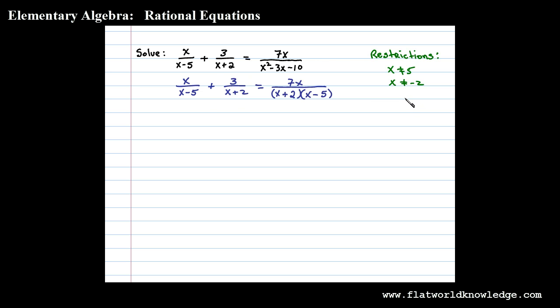Once we make note of the restrictions we can clear the fractions by multiplying both sides by the LCD. In this case the LCD is x plus 2 times x minus 5. When we multiply both sides by the LCD we have to take care to apply the distributive property and multiply this LCD times both of the terms on the left side.